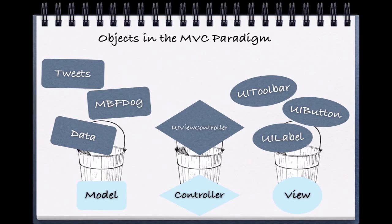Finally, the controller — which is usually a view controller for us — is a great way of linking the two. The controller is responsible for accessing the model and communicating that information with the view. For example, our MBF view controller was responsible for making our image view display our model of our MBF dogs. Think of the controller as the message man. The key concept to take away is that the controller is responsible for communicating between the model and the view. As such, the model and the view should never ever communicate with each other — the controller is in charge of making our views display what is in our model.